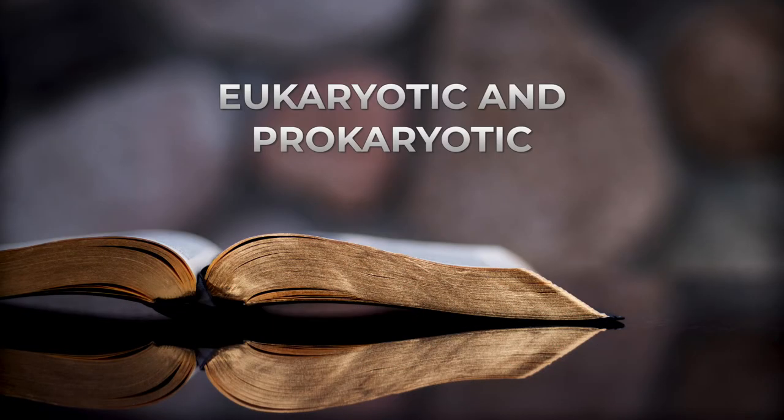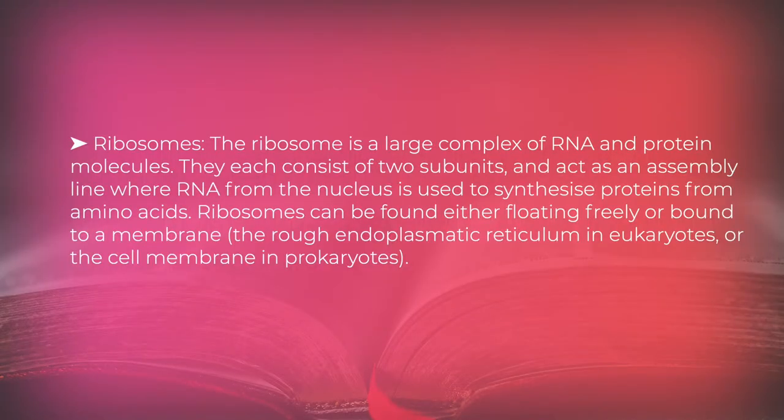Ribosomes are large complexes of RNA and protein molecules. They each consist of two subunits and act as an assembly line where RNA from the nucleus is used to synthesize proteins from amino acids. Ribosomes can be found either floating freely or bound to a membrane, the rough endoplasmic reticulum in eukaryotes, or the cell membrane in prokaryotes.